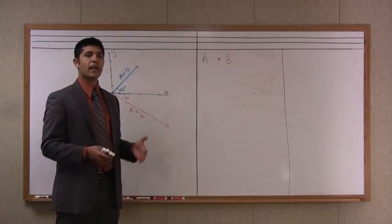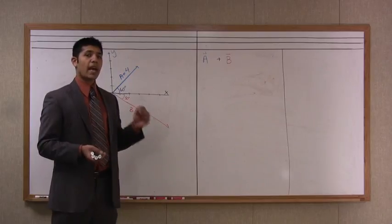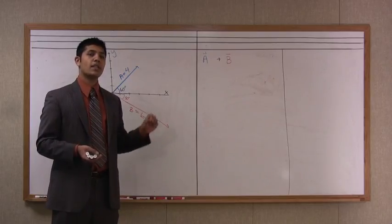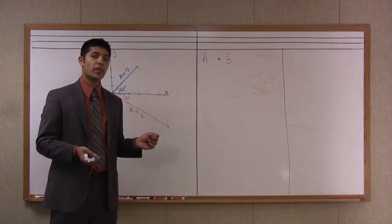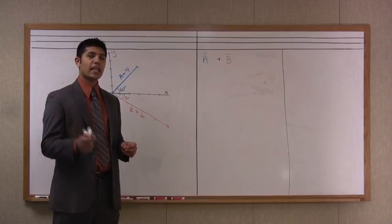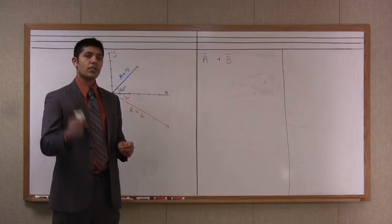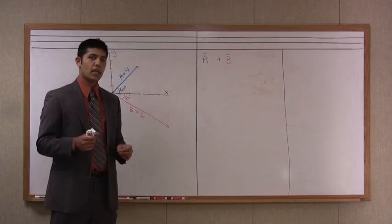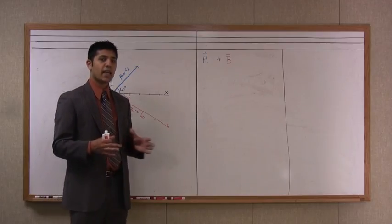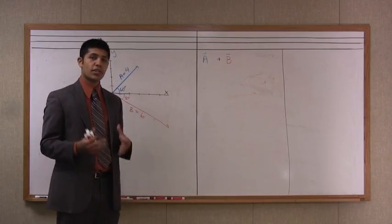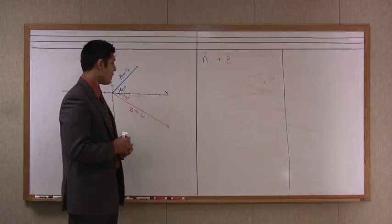Now the problem here is we cannot just add vector a plus vector b and get a value of 10. That would be an incorrect mathematical usage of these vectors. What we have to do is we need to break each one into an x component and a y component using the previously documented strategy of SOHCAHTOA. This is going to be integrating a couple ideas together and showing you a proper way to show your students how to approach this information.